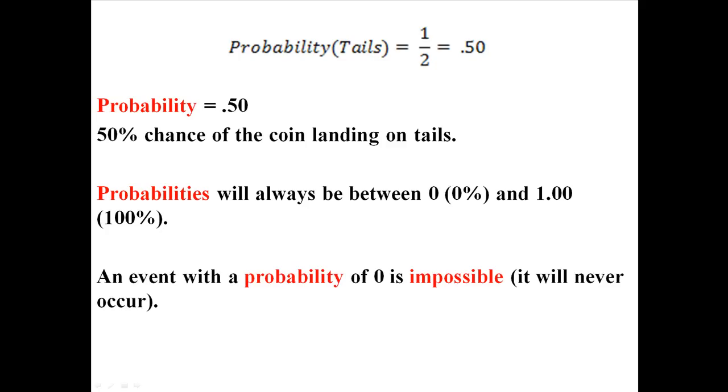An event with a probability of 0 is impossible, as in, it will never occur. And an event with a probability of 1 is certain, as in, it will always occur.